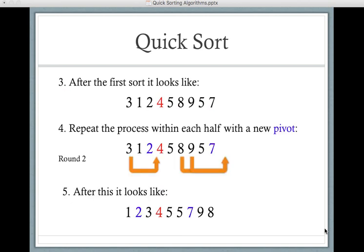So after our first sort, this is what it looks like: 3, 1, 2, 4, 5, 8, 9, 5, 7.